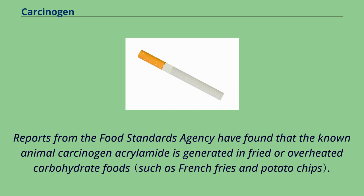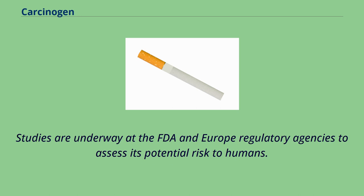Reports from the Food Standards Agency have found that the known animal carcinogen acrylamide is generated in fried or overheated carbohydrate foods. Studies are underway at the FDA and European regulatory agencies to assess its potential risk to humans.